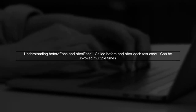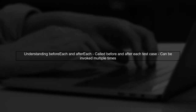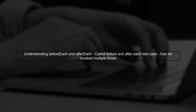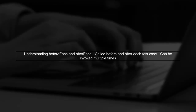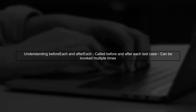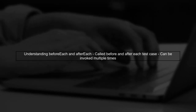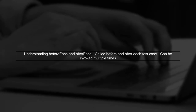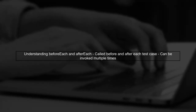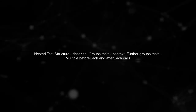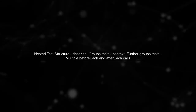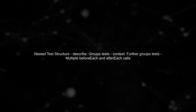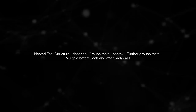In unit testing with QUIC, the before each and after each blocks are designed to run before and after each test case. However, you may notice that they can be called multiple times. This behavior occurs because of the nested structure of your tests. Each describe and context block can introduce its own before each and after each, leading to multiple invocations.